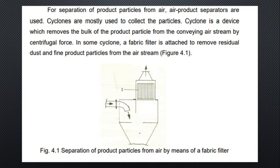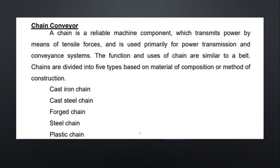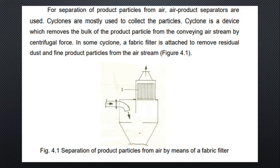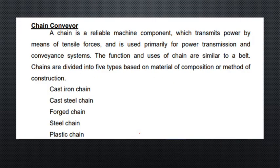Limitations of pneumatic conveyors: they cause erosion on solid surfaces or equipment surfaces, as the conveying air erodes surfaces and erosion problems occur. There are chances of impact between particles and solid surfaces, leading to product degradation. As a result, pneumatic conveyors are rarely used compared to other types. The chain conveyor performs the same function as the belt conveyor — it is reliable and compact, transmitting power by means of tensile force.